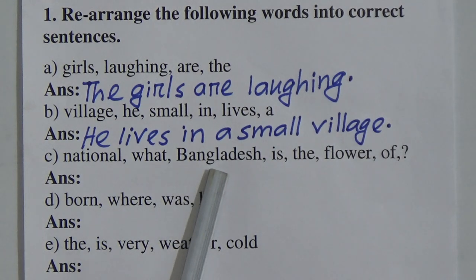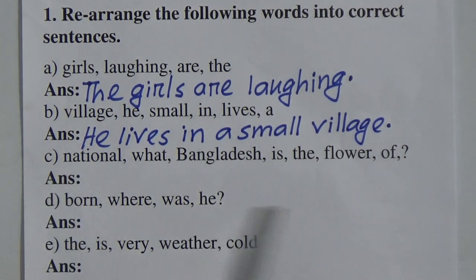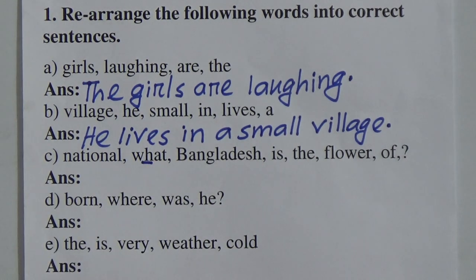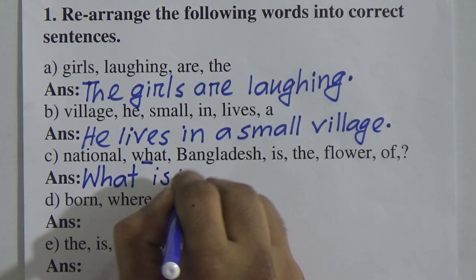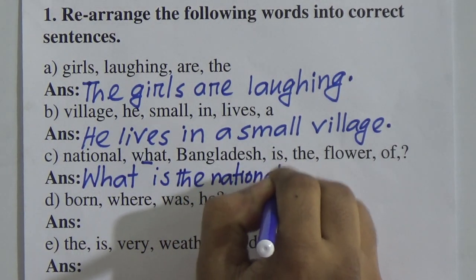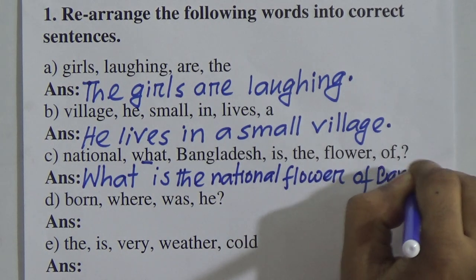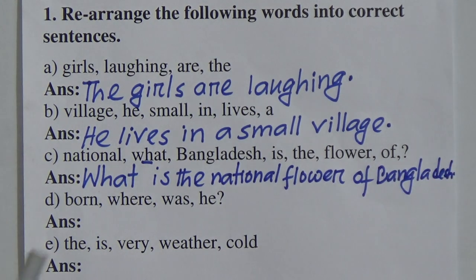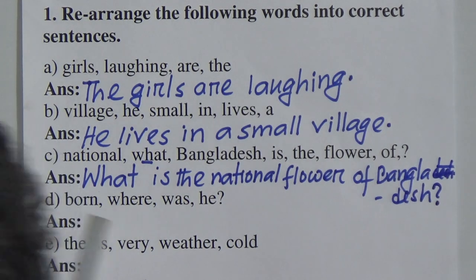Number C: 'national word, Bangladesh, is the flower of.' There is a question mark at the end, so if a question mark is present, we take the auxiliary verb first. And if a WH-word comes, we take the WH-word first. So: What — capital W — then auxiliary verb 'is.' What is the national flower of Bangladesh? At the end, we give a question mark.